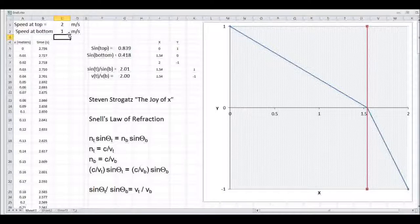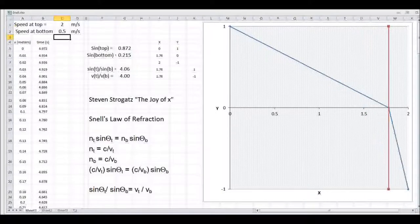Now if we make, instead of the ratio of the times being 2 to 1, let's make it 4 to 1. Let's go 2 meters per second in the top field and 0.5 meters per second in the bottom field. And you'll see that it has even a longer distance in the top field, as you can see.